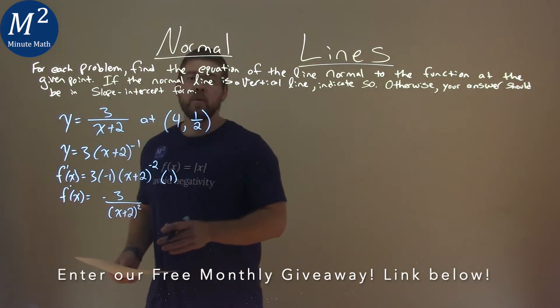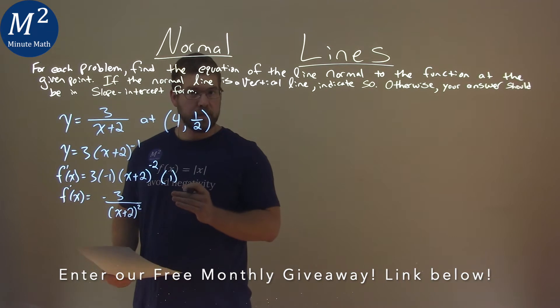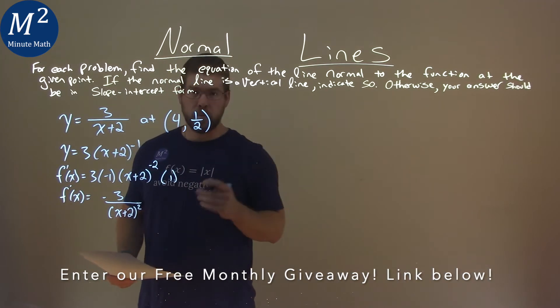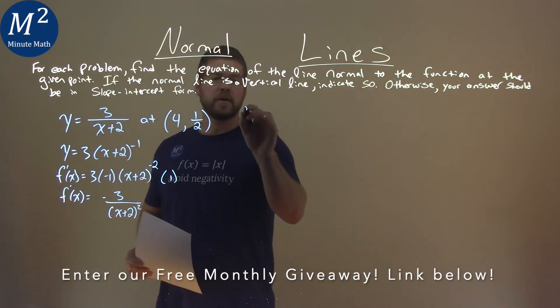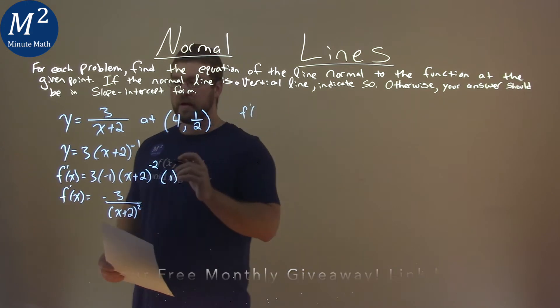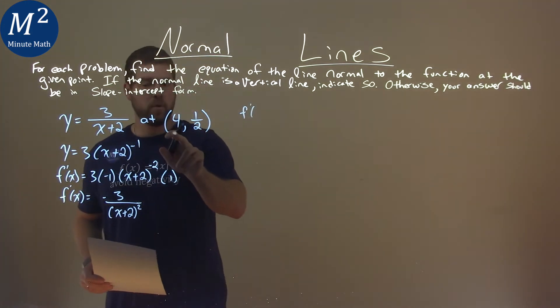Now, from here, we want to find the slope of the tangent line, and we can use it to find the slope of the normal line. So, we take our function, our derivative, f prime of x, and we're going to put in our x value, 4 in for x.